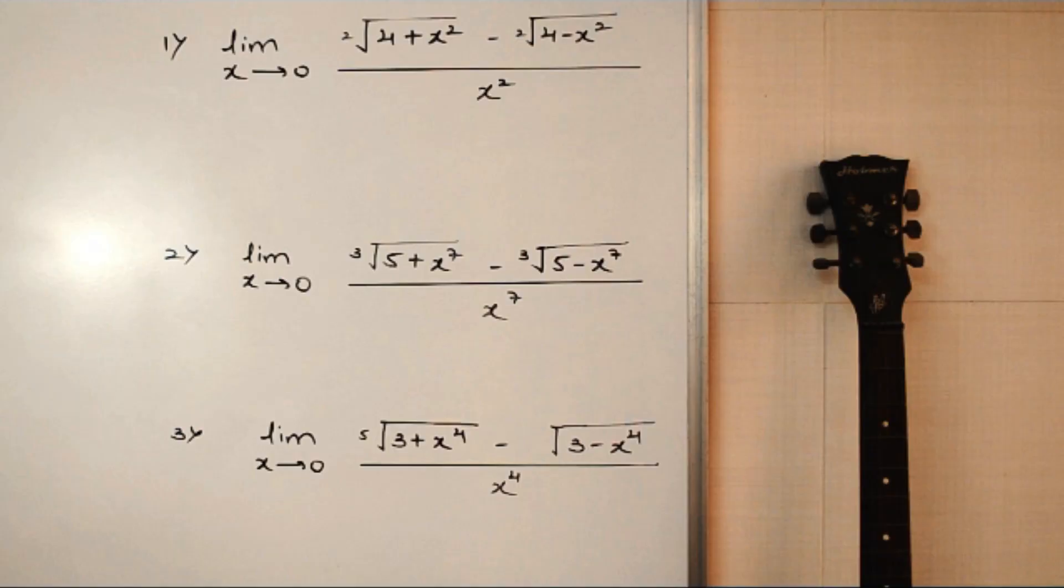All right guys. Now, here we have some questions based on limits of radical functions on the board. In the normal way, first of all we have to rationalize it, then apply the limit to each function separately, and then solve it. This takes 2 to 3 minutes.